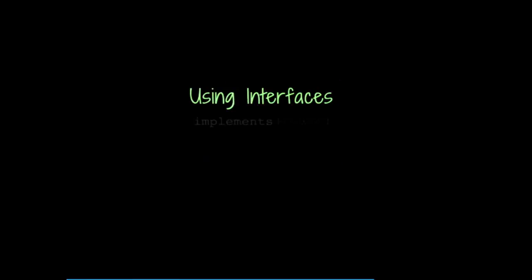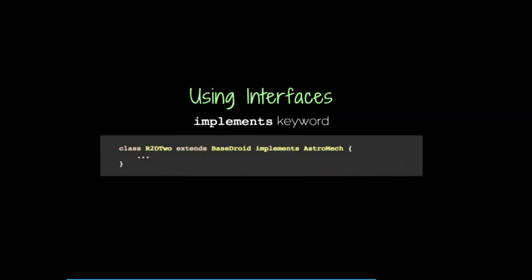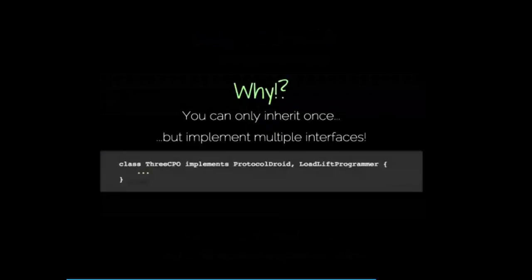So how do we use an interface? There's a special keyword called 'implements.' It's like the 'extends' keyword for inheritance, but instead it implements a thing, because a class implements a contract. So if we have 'class R2,' it extends a base class called 'BaseDroid' and implements an interface called 'Astromech.' You can combine these constructs together for some very powerful modeling.